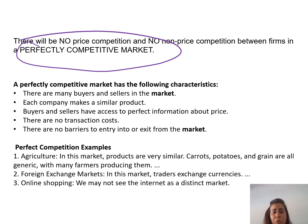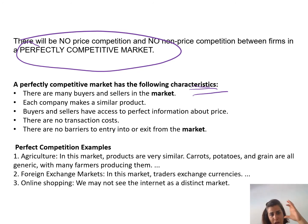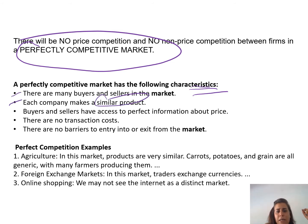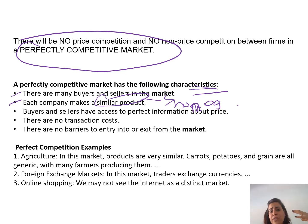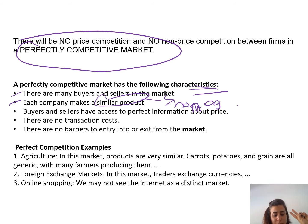A perfectly competitive market has the following characteristics, found in your book on page 249, last paragraph. There are many buyers and sellers in the market and each company is making a similar — or homogeneous — product. Buyers and sellers have access to perfect information about price. All firms have access to the same knowledge, so all firms supplying the market have perfect knowledge.